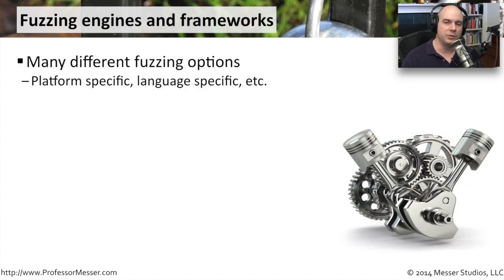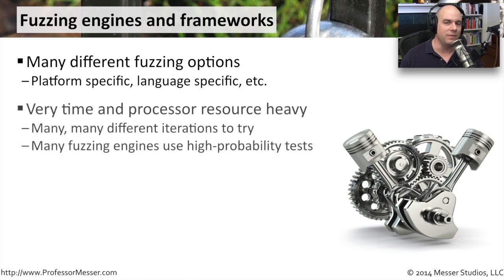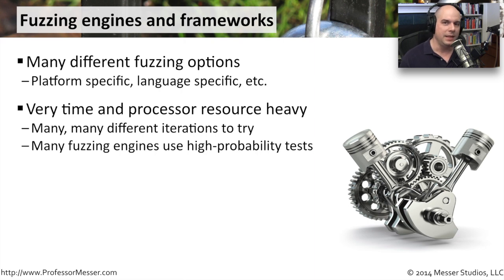Since then, many new frameworks have been created for fuzzing that focus on certain application types, certain platforms, or even certain operating systems. These frameworks are very time-consuming and resource-heavy to use. You have to go through a lot of iterations because usually your application isn't going to break easily — you have to try a lot of randomization across different fields and different input methods. Many fuzzing engines have a set of high-probability tests built in, targeting things that applications tend to handle poorly, so you can find common problems faster.